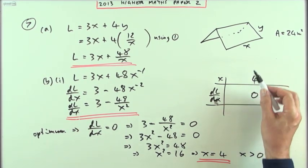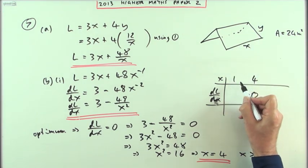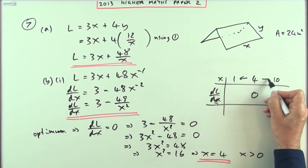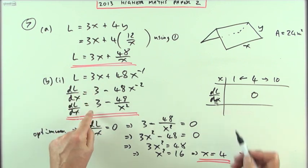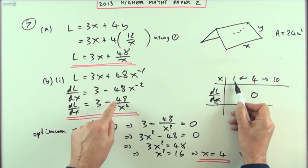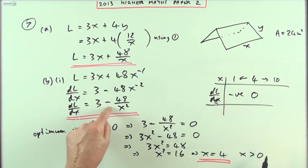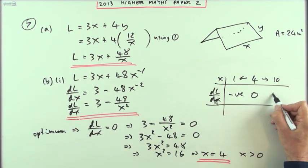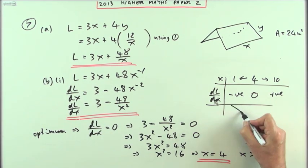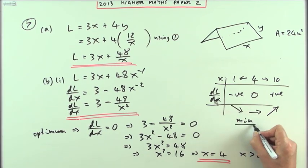Pick a number before. Remember, it's a real question. You can't just do anything, but there doesn't seem to be any limit here. There's no reason why x couldn't get down to 1 or up to 10, for instance, just to try some numbers before and after, and then use it in this expression here. So I've got 3 take away, and that'll be 48 over 1. 3 minus 48 is pretty negative. 10, that'll be 3 minus 48 over 100. That's only a little fraction, around about a half, so I'll be positive. Which means that the graph would look like this, and I can justify by saying I've got a minimum there.